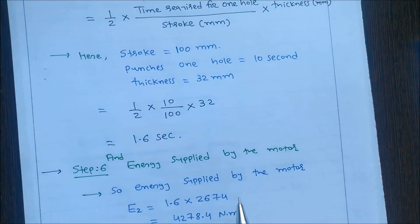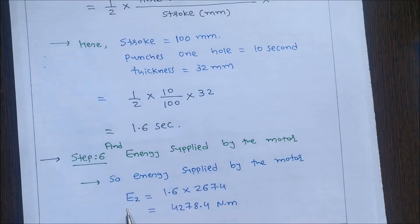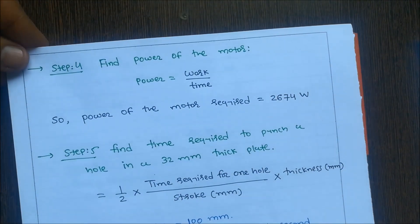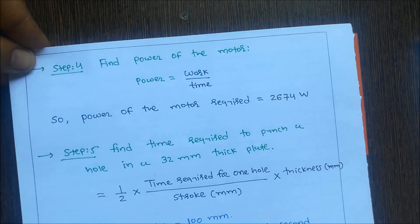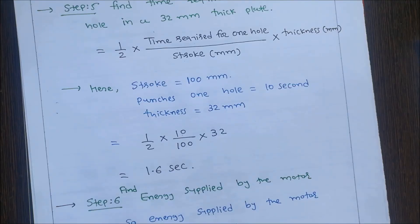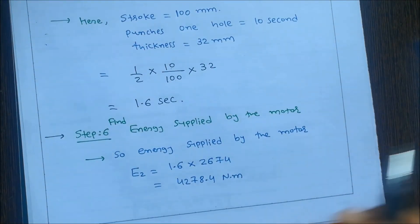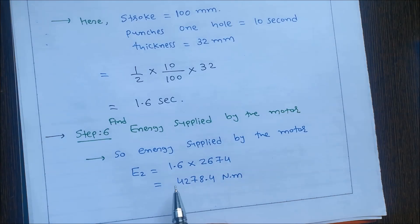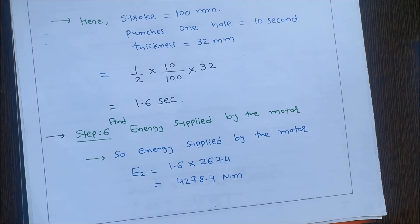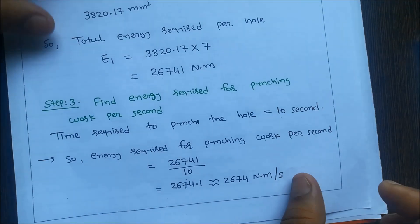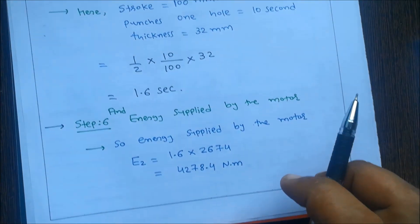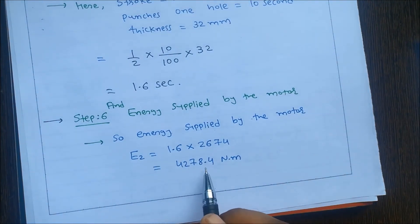Step 6: Find energy supplied by the motor. e2 = power of motor × time required to punch = 2674 × 1.6 = 4278.4 N·m. So e1 = 26741 N·m and e2 = 4278.4 N·m.